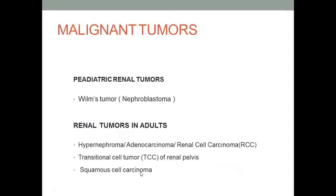Coming to the pediatric age group, the tumor is Wilms tumor or nephroblastoma. In adults, tumors can be of three kinds: renal cell carcinoma (also called adenocarcinoma or hypernephroma), transitional cell carcinoma of the renal pelvis, and squamous cell carcinoma arising from the renal pelvis.